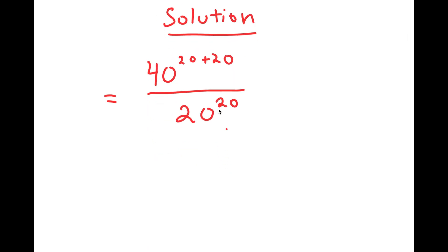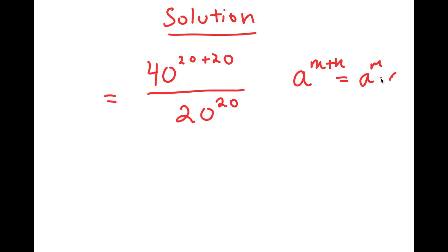And now I can use the property that states that if I have something in the form a to the power of m plus n, this is equal to a to the power of m times a to the power of n.